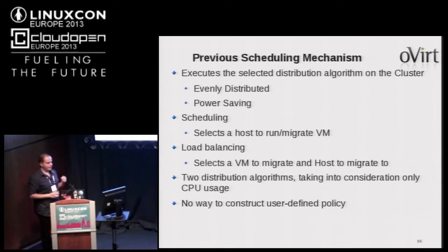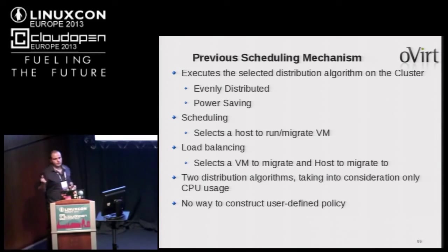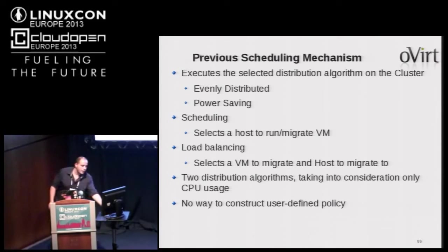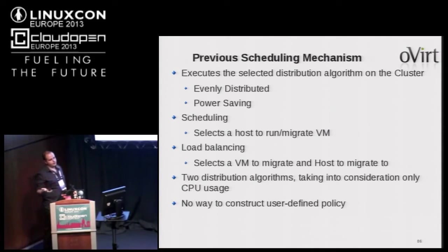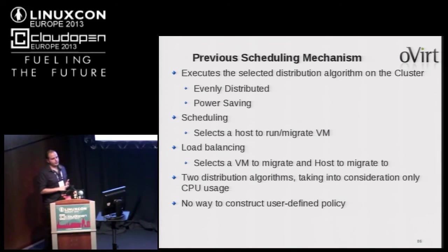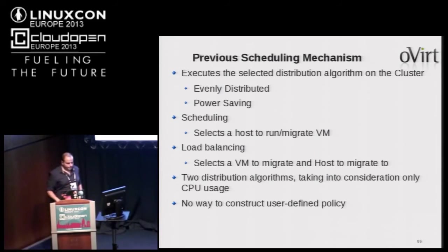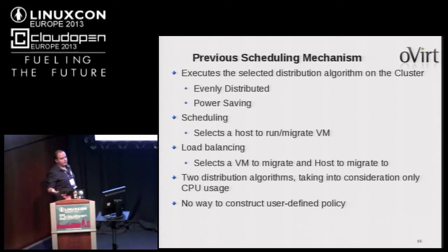The scheduling mechanism decides where to run a VM using one of these policies. We also had a periodic load balancing mechanism that checked whether VMs needed to be migrated to be more compliant with the policy — for example, migrating VMs from an overloaded host in evenly distributed mode. We only had two distribution algorithms, both considering only CPU usage, with no way to construct your own policy.